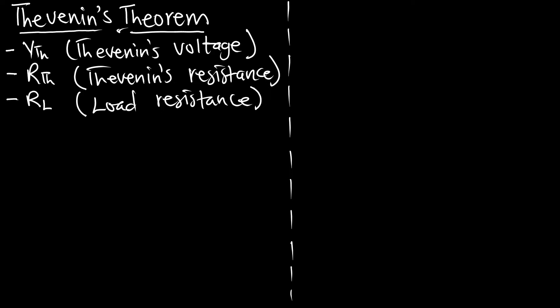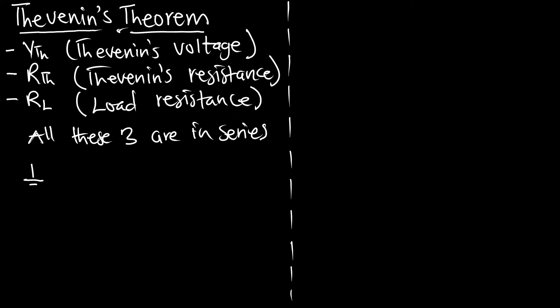Always, we are going to find a circuit where all these three elements are going to be in series with each other. We are going to combine the voltage source, which is the Thevenin's voltage, in series with the Thevenin's resistance, and it is also going to be in series with the load resistance. So this is the VTH, this is our RTH, and this is our RL.